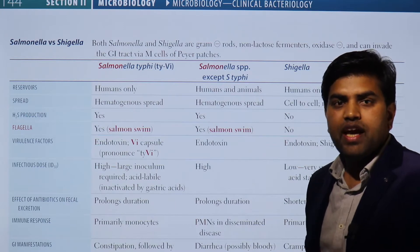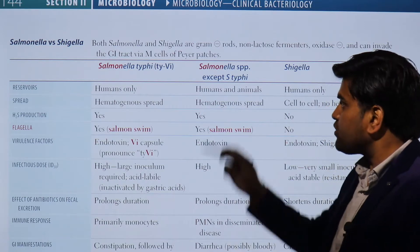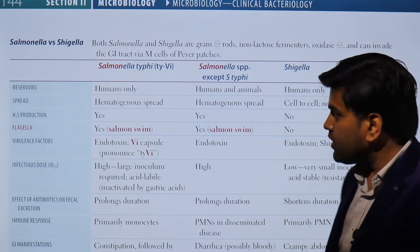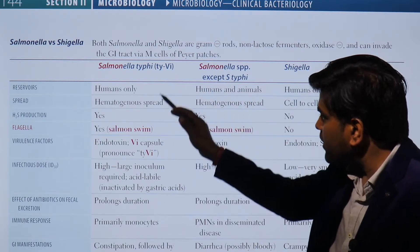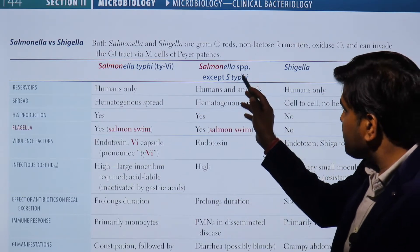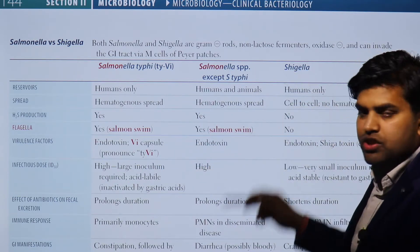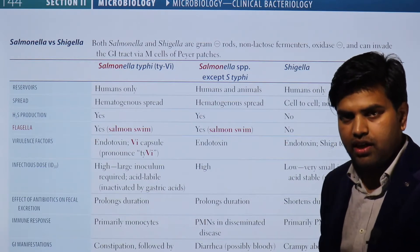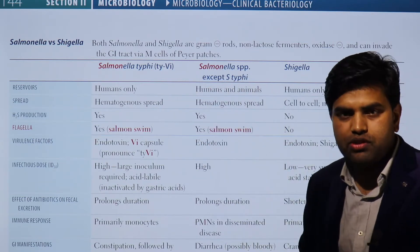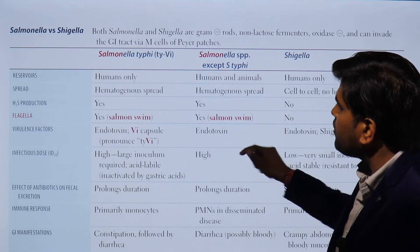Both Salmonella and Shigella can evade the GI tract via M cells of the Peyer's patches, causing infection. Salmonella typhi causes enteric fever (typhoid fever). Other Salmonella species cause local gastroenteritis. Shigella species cause invasive or bloody diarrhea, limited to the intestine, though Salmonella can spread systemically.